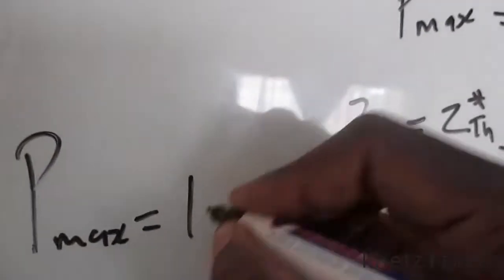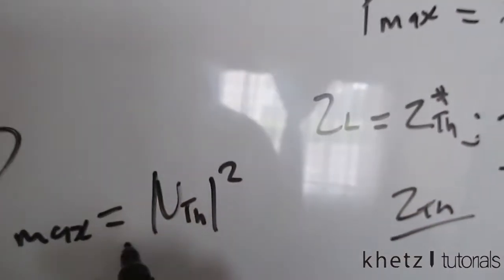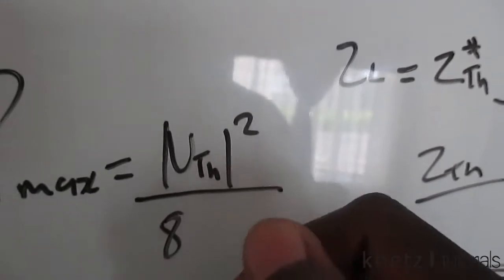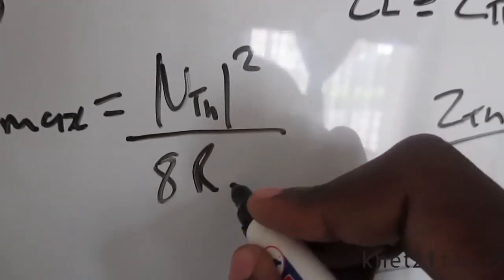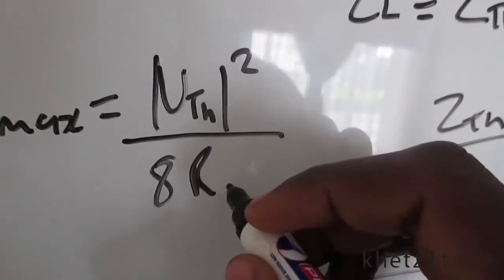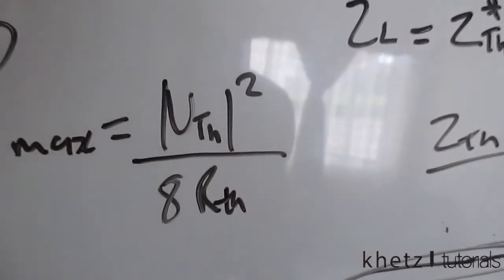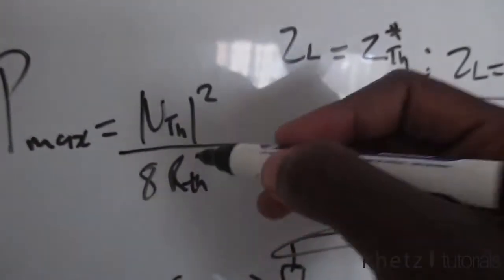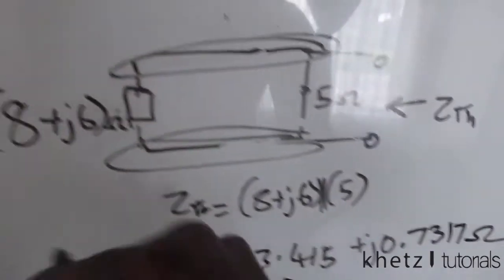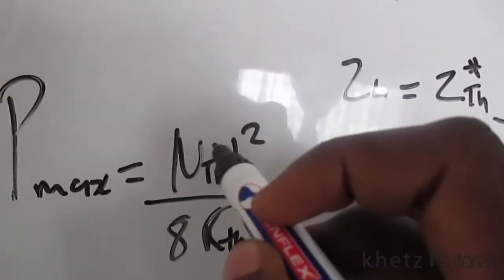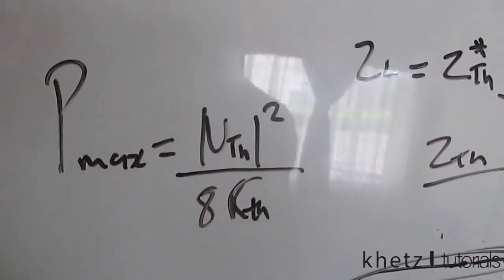The second part of the question asks us to find the value of our maximum average power. The formula for this is the amplitude of Vth squared, divided by 8 multiplied by the real part of our Zth, the Thevenin equivalent impedance. We already have Zth from this part, and we need Vth to ultimately find our maximum average power.